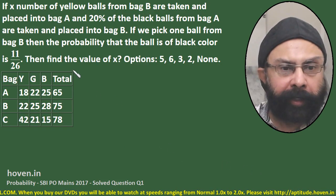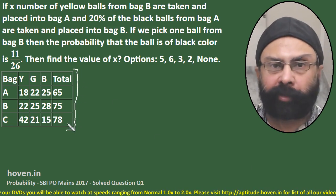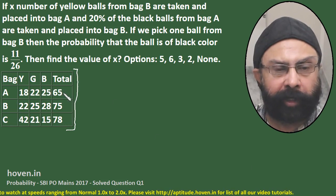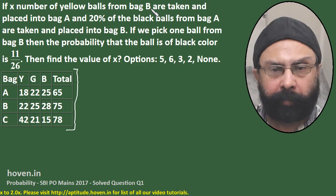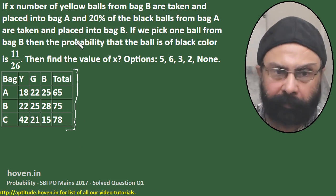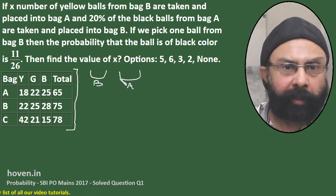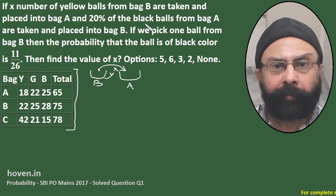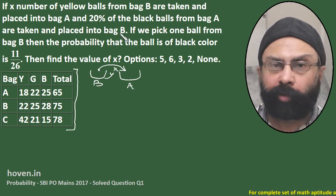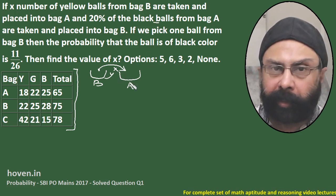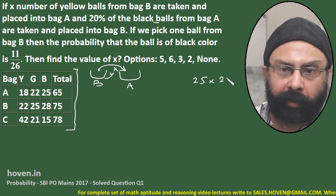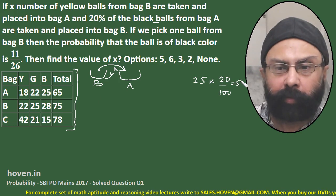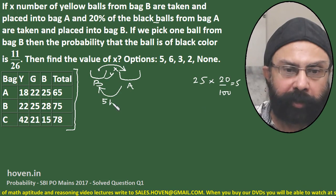This is the first question. The ball counts are recorded: bag A has yellow = 18, green = 22, black = 25. If X yellow balls from bag B are moved into bag A, and 20 percent of black balls from bag A are moved into bag B — bag A has 25 black, so 20% of 25 = 5 black balls move into bag B.